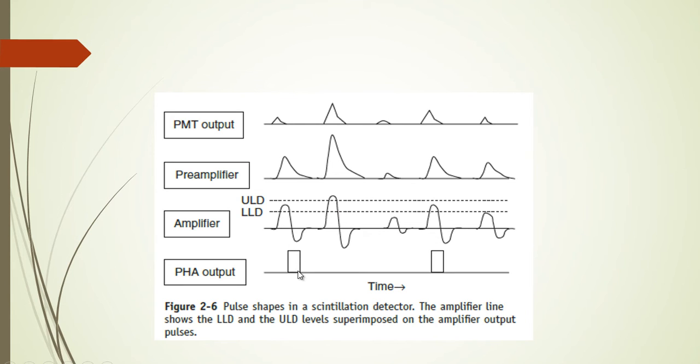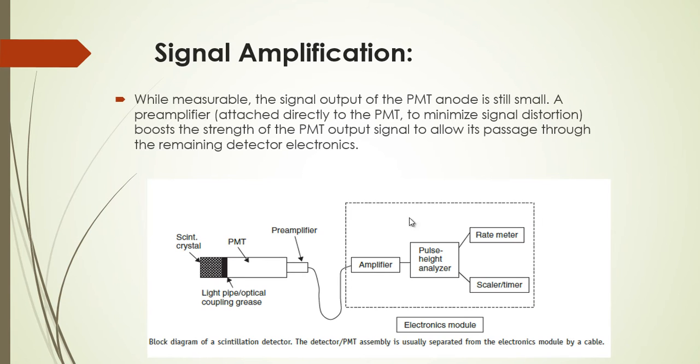These pulses returned from the pulse height analyzer are always of the same height and same time period or same width. As you can see from this graph, in this case the condition was true—the amplitude of the signal from the amplifier lies within LLD and ULD. This time it isn't true, this time it isn't true, and this time again it is true, so it returns a true signal.